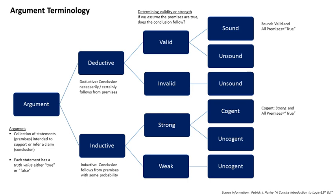For a move from particular to universal, Aristotle in the 300s BCE used the Greek word epagogé, which Cicero translated into the Latin word inductio. In the 300s CE, Sextus Empiricus maintained that all knowledge derives from sensory experience, and concluded in his Outlines of Pyrrhonism that acceptance of universal statements as true cannot be justified by induction.